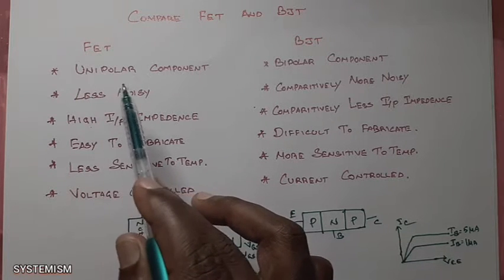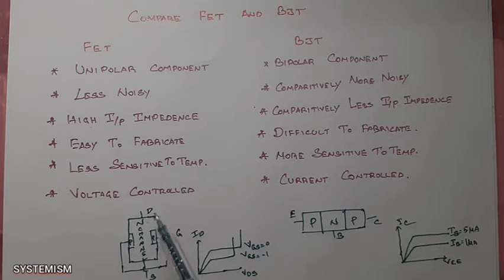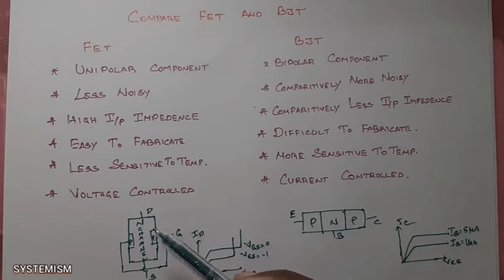In the first point, it is an unipolar component. What is the mean by unipolar? In this the operation is mainly due to majority charge carriers. In this n-channel field effect transistor, majority charge carriers are electrons. So only electrons move in this type of field effect transistor n-channel FET.